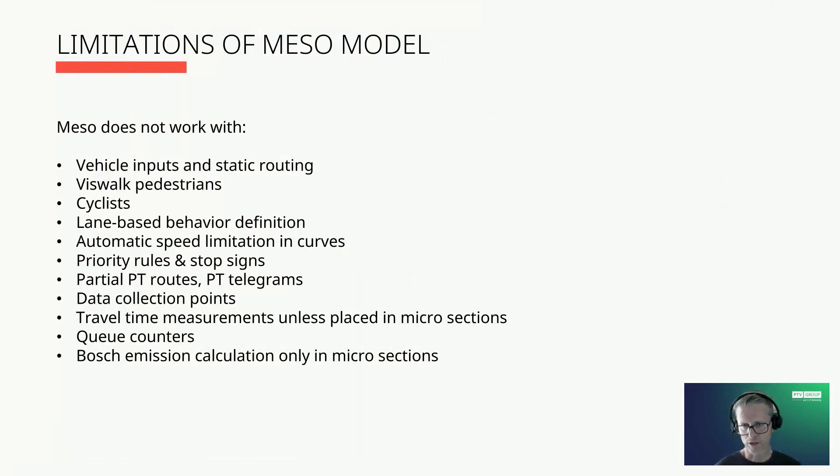The meso model also has a few limitations. This means that some functions cannot be used, such as cyclists or pedestrians. Some functions are only permitted in the micro sections, such as travel time measurements or calculation of pollutant emissions.